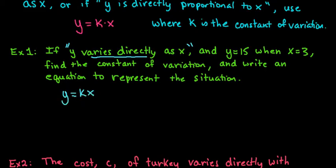There is more than one way to do this, but I'm going to show you this one method, it's just the easiest. And then it tells us that y is 15 when x is 3. So our first step is going to be to find the constant of variation.